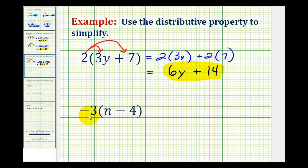And for the last example, we have negative three times the quantity n minus four, so we're distributing negative three, so we'll have negative three times n minus negative three times four. And we need to be a little careful when distributing a negative and we have subtraction.